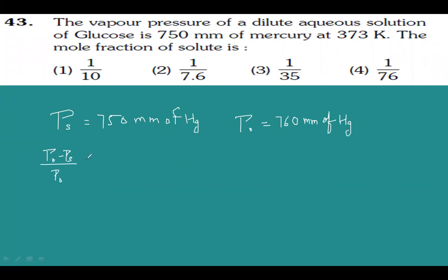The mole fraction of solute can be calculated using the formula: (P° - Ps) / P°, which equals the mole fraction of solute. That gives us (760 - 750) / 760.